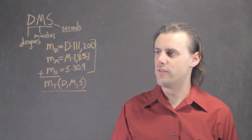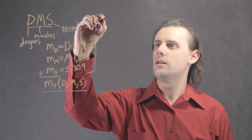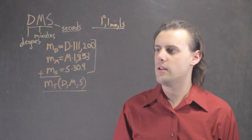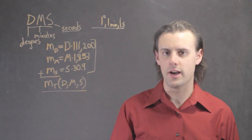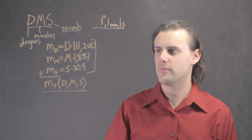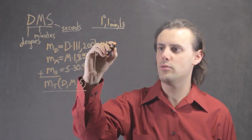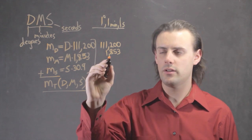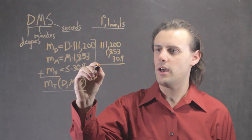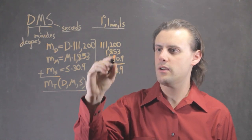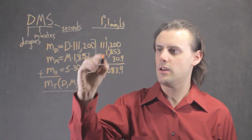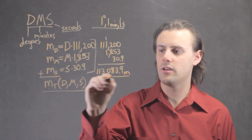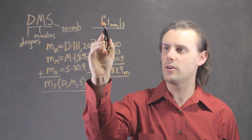So if, for example, I had one degree, one minute, and one second, then I would simply be adding up the conversion factors to get my total distance in meters. So when I do that, I have 111,200 plus 1,853 plus 30.9, and I get 113,083.9 meters as a distance for one degree, one minute, and one second.